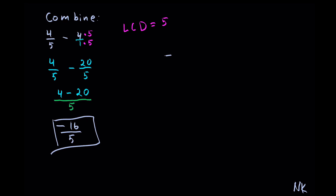However, negative 16 out of 5 can be rewritten as a mixed number. You can do it by long division. 5 goes into 16 three whole times. 5 times 3 is 15. Look for the difference, so minus. And we get 16 minus 15, the remainder would be 1. If you do it by long division, the sign is still the same. Negative: 5 goes into 16 three whole times, and the remainder was 1 out of 5.